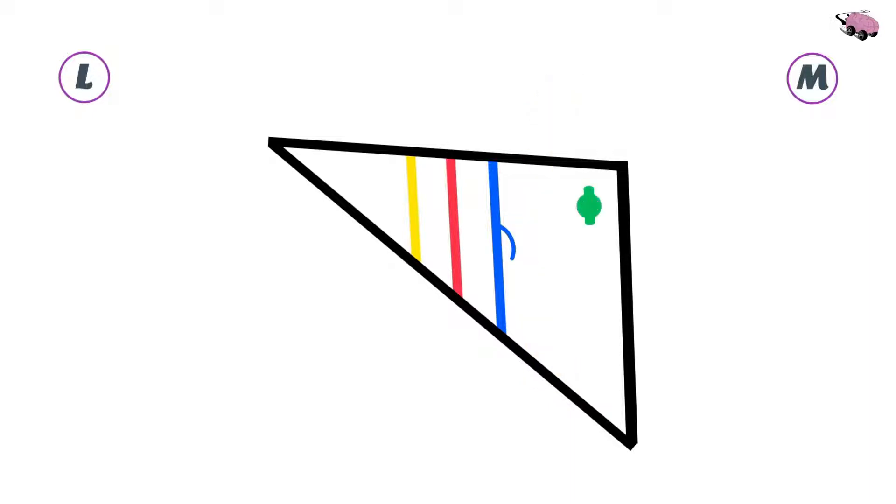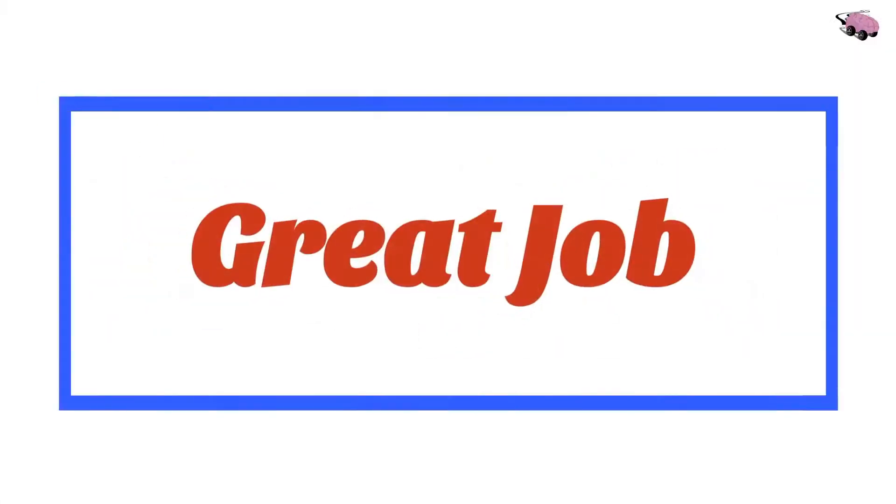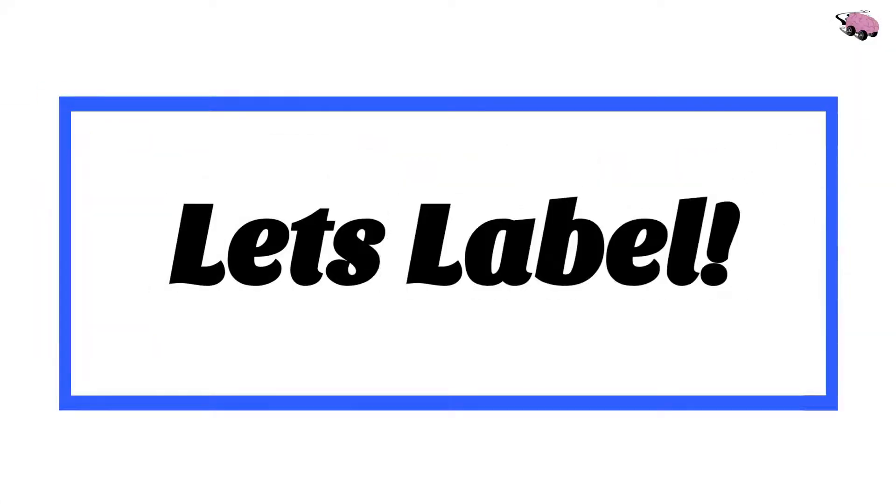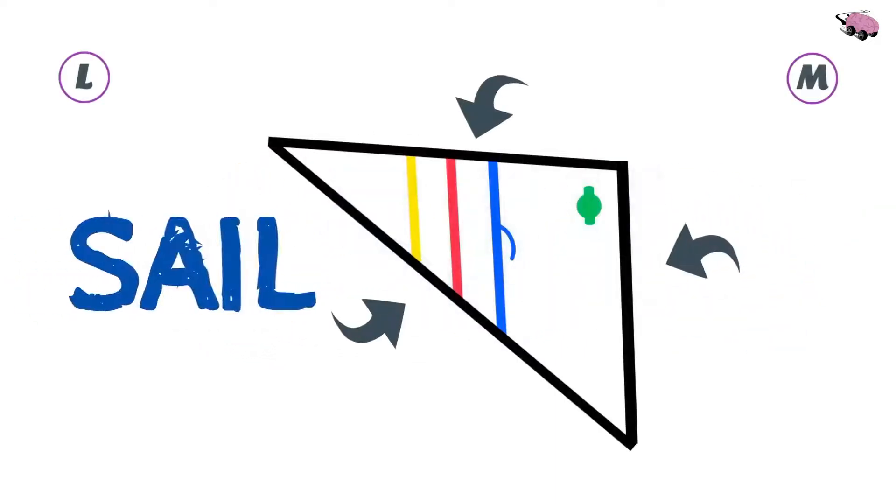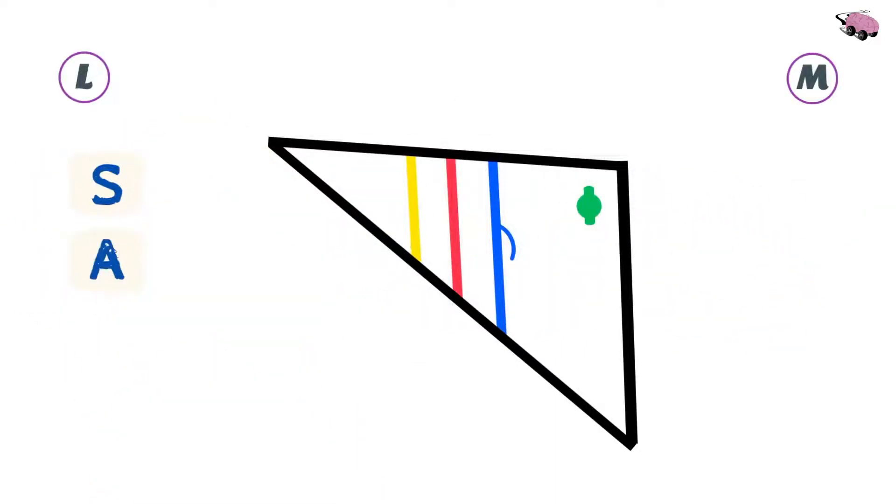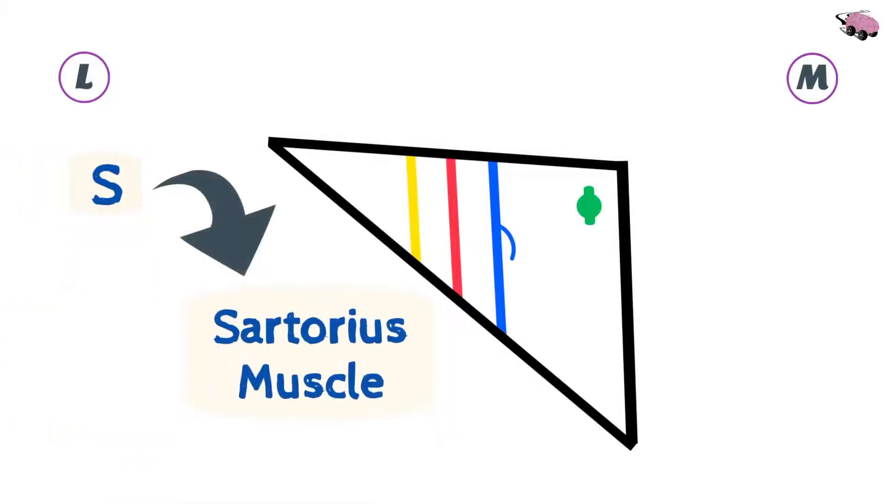Great job, the drawing is pretty much complete. Let's label. We will use the mnemonic SAIL. SAIL represents the borders of the femoral triangle. S-A-I-L. S stands for sartorius muscle, which represents the lateral border.